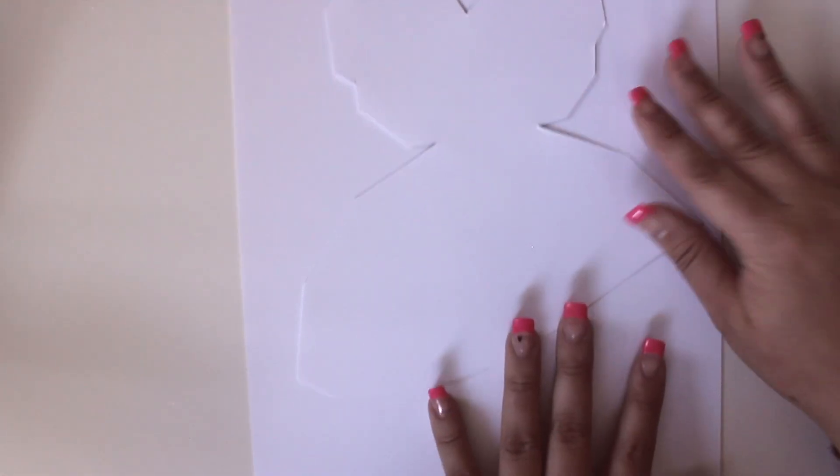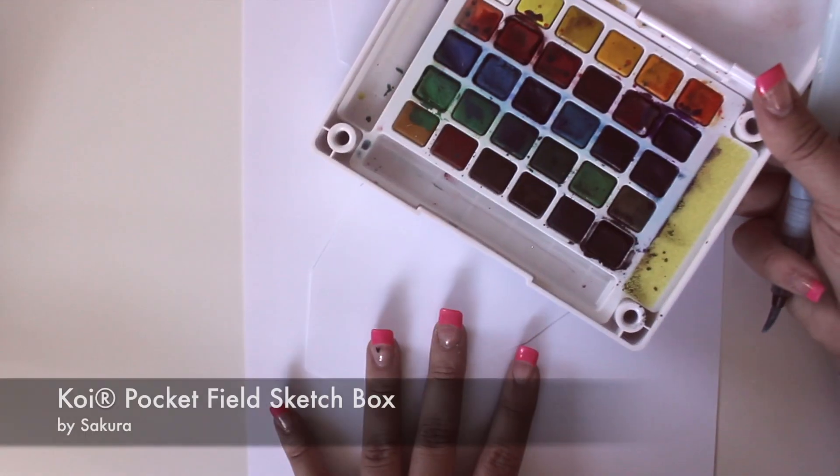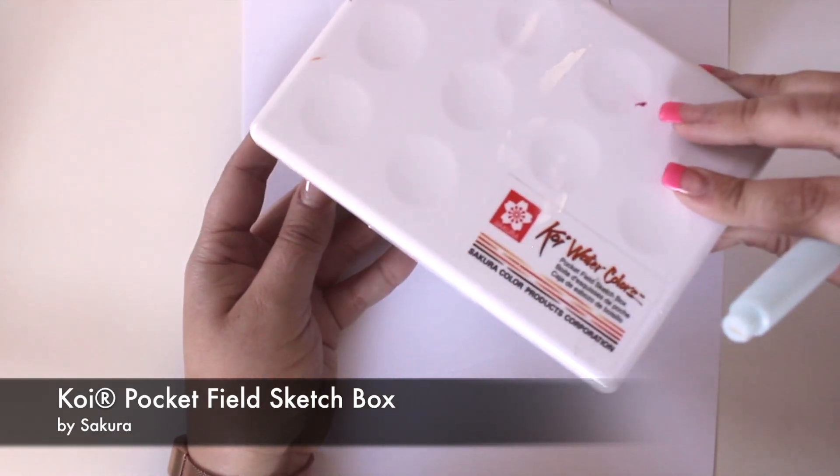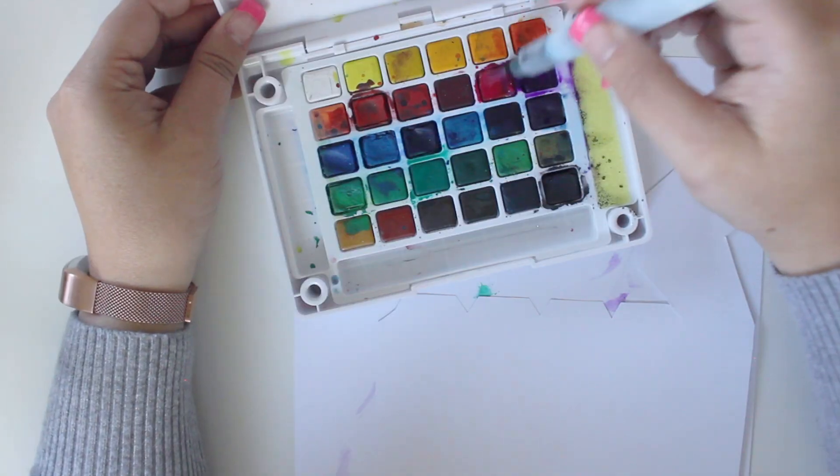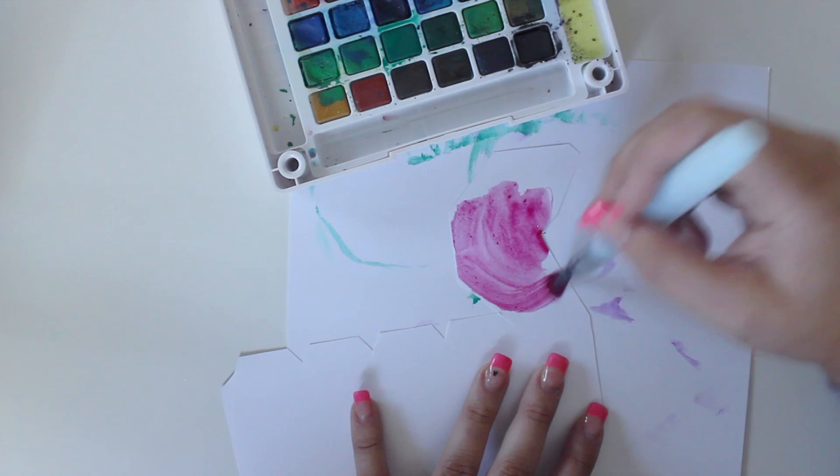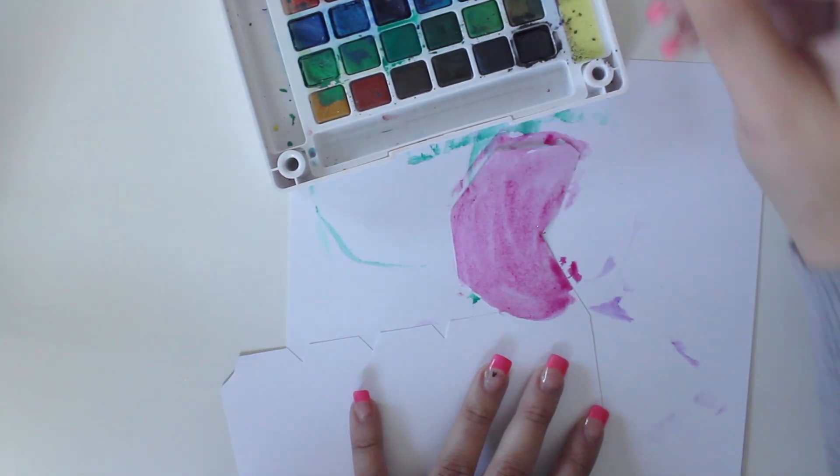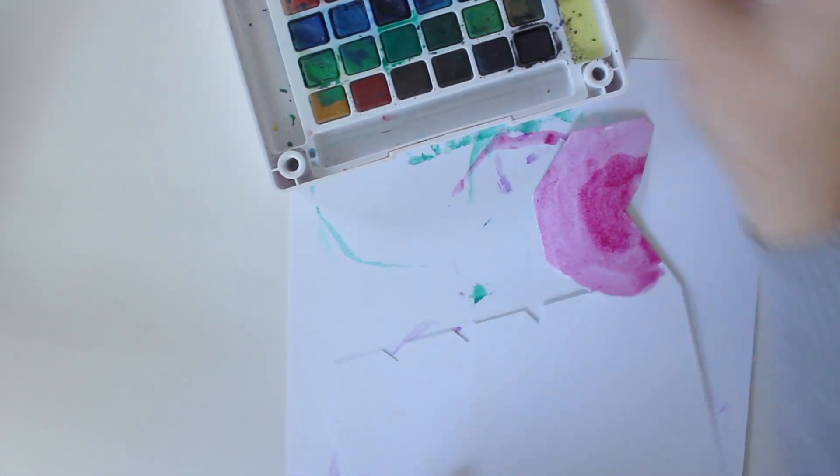Turn the paper to the unprinted side and add a watercolor wash. I really like the Koi pocket filled sketch box because it contains a lot of vibrant colors in a compact box. It also comes with a water brush which you fill with water. Squeeze the shaft of the brush to produce water droplets.